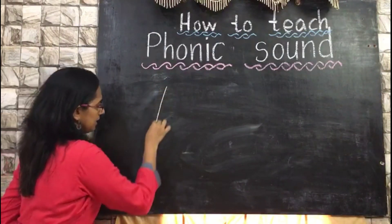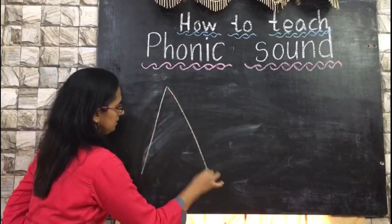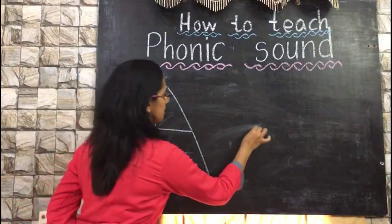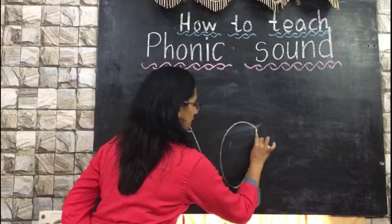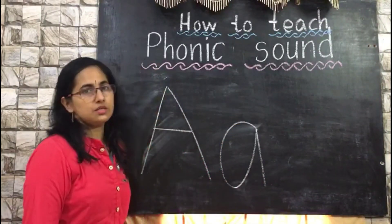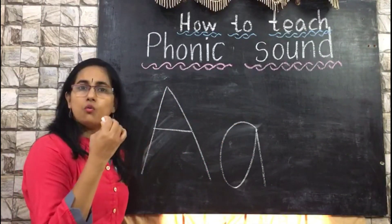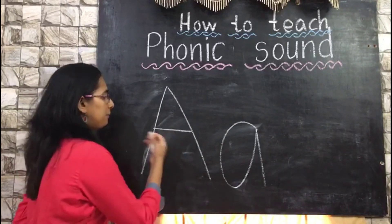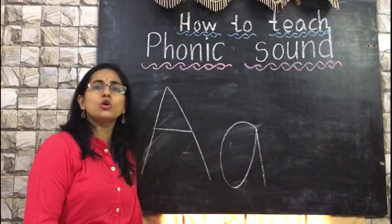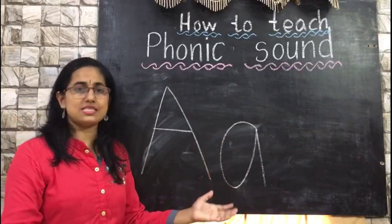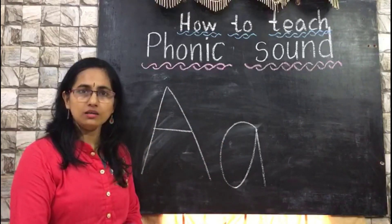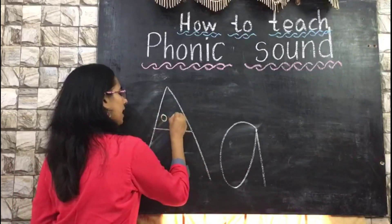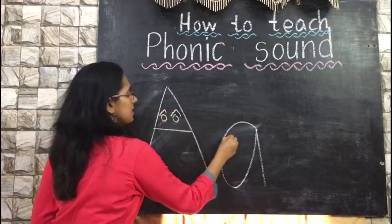Here we have capital A and a small A. When I introduce these to my kids, I won't say 'capital A' or 'small A' — I don't want to cause confusion since they are tiny ones. I'll say this is the mommy A and this one is the baby A.